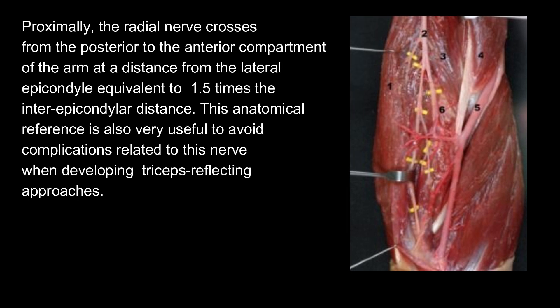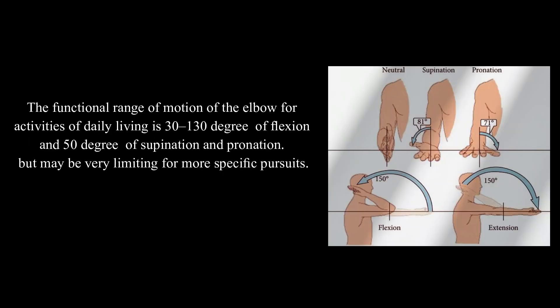The radial nerve crosses from the posterior to the anterior compartment of the arm at a distance from the lateral epicondyle equivalent to 1.5 times the inter-epicondylar distance. This anatomical reference is very useful to avoid complications related to this nerve when developing triceps reflecting approaches. The functional range of motion of the elbow for activities of daily living is 30–130 degrees of flexion and 50 degrees of supination and pronation.